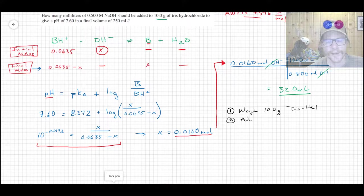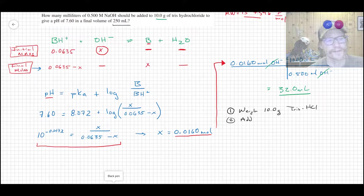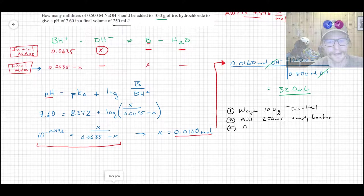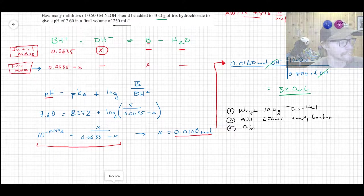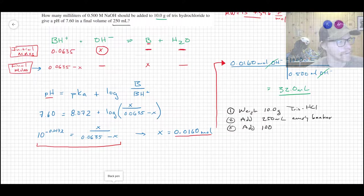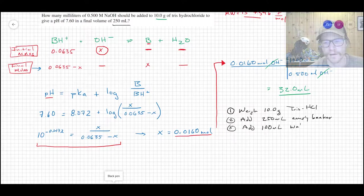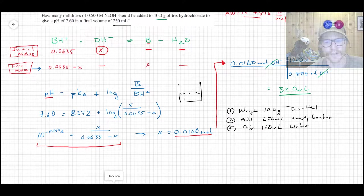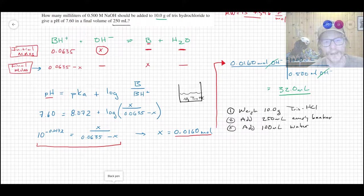What I would do and what your book would do, which is the sort of most practical way, would be to start with a beaker and weigh out your 10.0 grams of Tris-HCl. So you weigh that stuff out. Second step, add to, we're trying to get to a final volume of 250, so I'd probably add this to a 250 mL empty beaker.